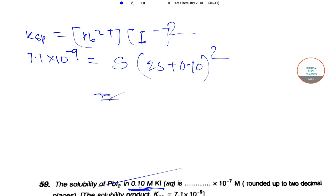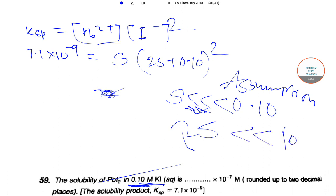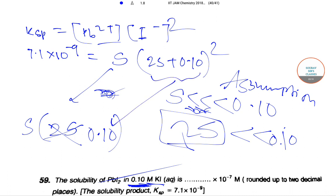Here we will approximate because we can always assume that the solubility of PbI2, or in this case 2S, will be much less than 0.10. So 2S << 0.10. Therefore, this whole expression will be approximately equal to 0.10.